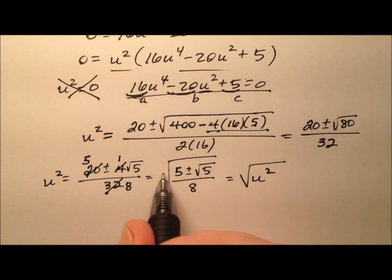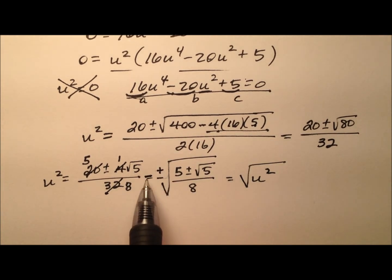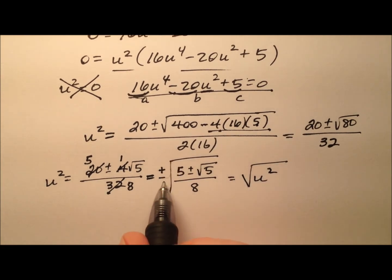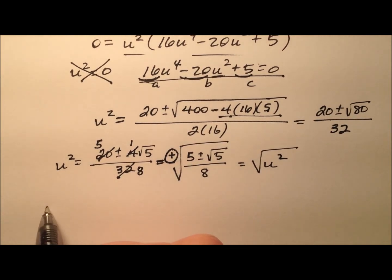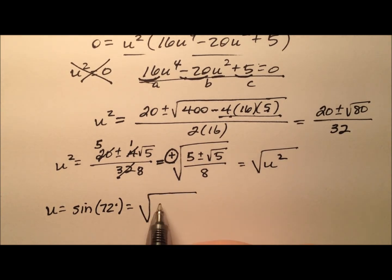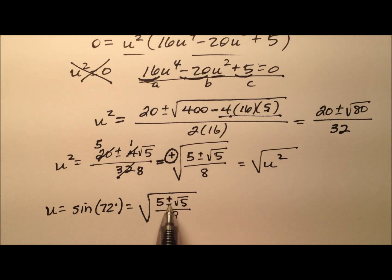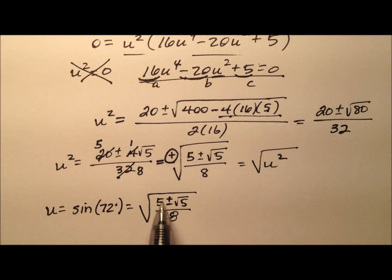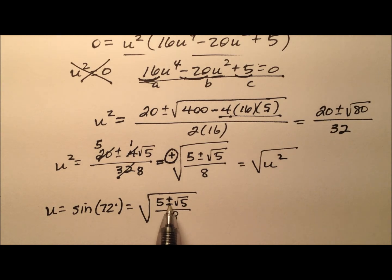Taking the square root of both sides, I have plus or minus on the left side. Since we're solving for the sine of 72 degrees, and 72 is in the first quadrant where sine is positive, I only want the positive value. So u equals the square root of the quantity 5 plus or minus the square root of 5, all over 8. Using the minus inside would give the sine of 36 degrees instead of 72, so I choose the plus, giving me the sine of 72 degrees equals the square root of 5 plus the square root of 5, all over 8.